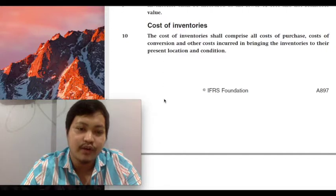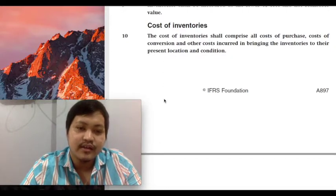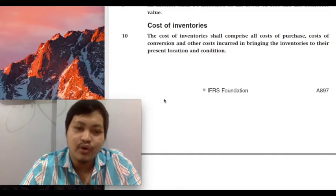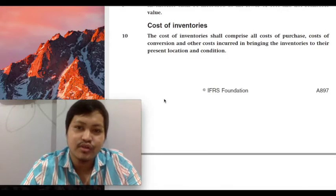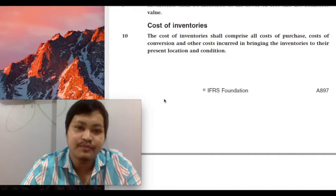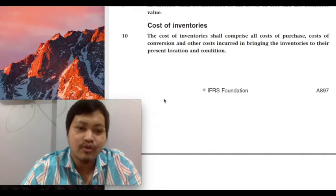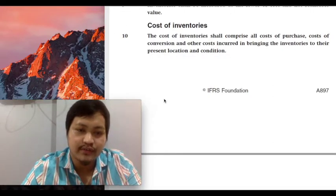But if you are just a merchandising firm, as mentioned in the previous videos, then cost of conversion will not be relevant. If you are a merchandising firm, you are engaged in retail — all you do is sell the goods in the same state in which you bought them. No process, no conversion will take place. So the cost of your inventories will not include cost of conversion.